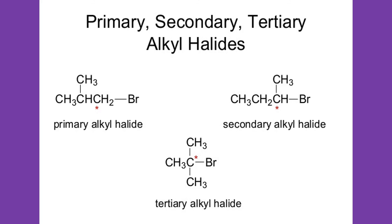These are the 3 different positions of halogens within the chain of carbon: a primary alkyl halide, a secondary alkyl halide, or a tertiary alkyl halide. A primary halide is a compound in which the halide ion is attached to a primary carbon. A secondary halide is a compound in which the halide ion is attached to a secondary carbon. And a tertiary halide is a compound in which the halide ion is attached to a tertiary carbon.